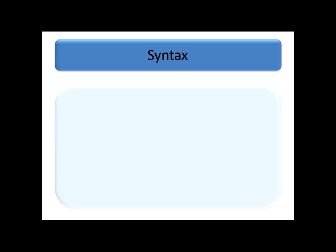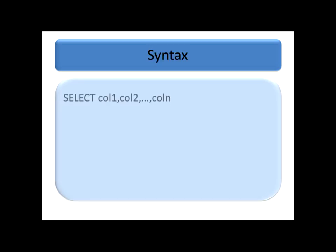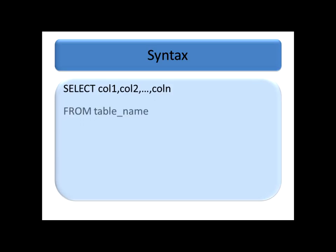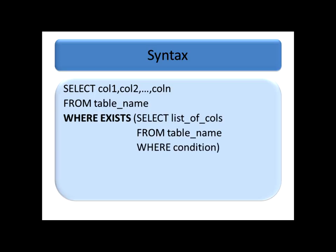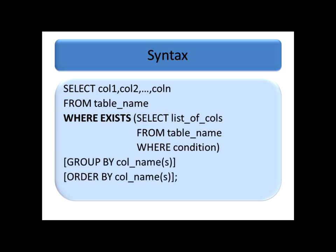The syntax says: SELECT columns FROM table name, WHERE EXISTS, followed by the subquery with SELECT list of columns FROM subquery table. The WHERE condition is optional. GROUP BY is optional and at the end we can have ORDER BY.